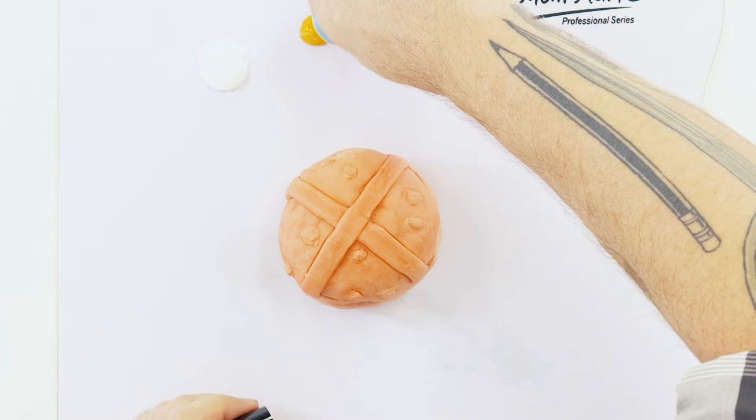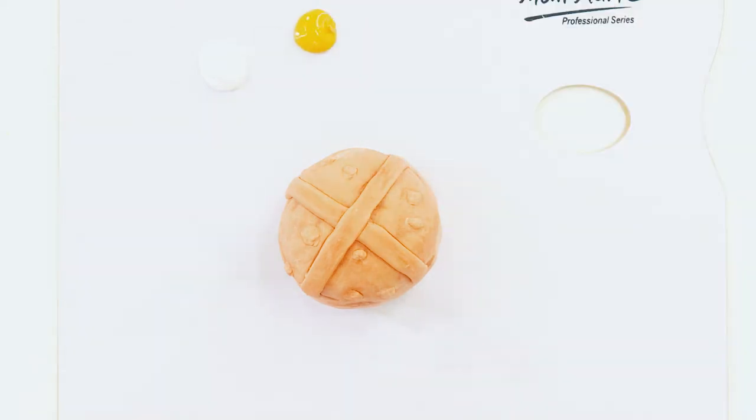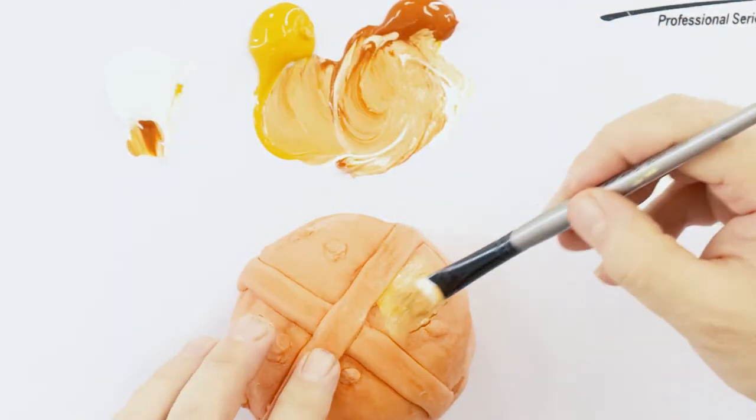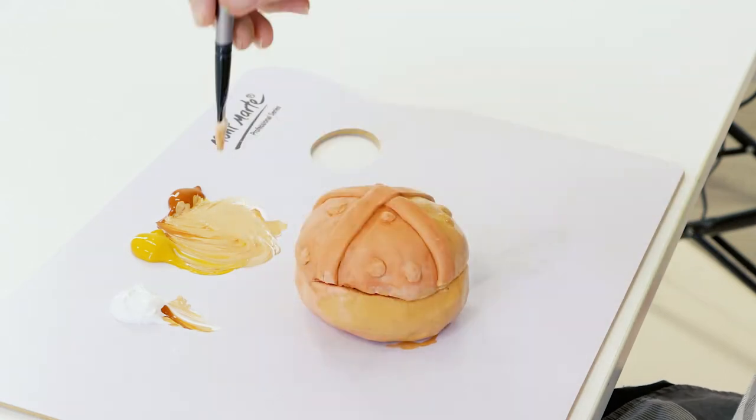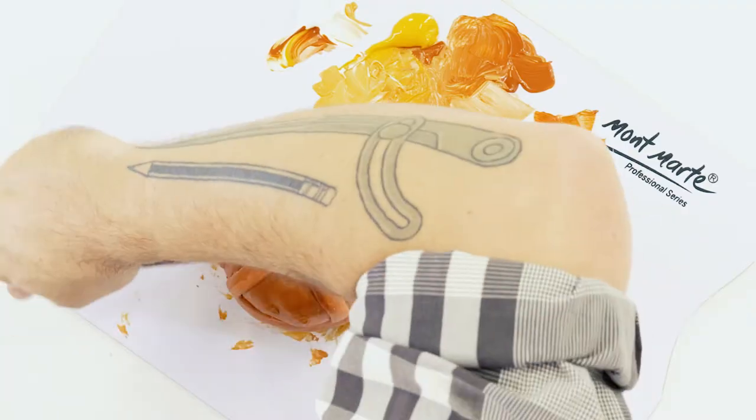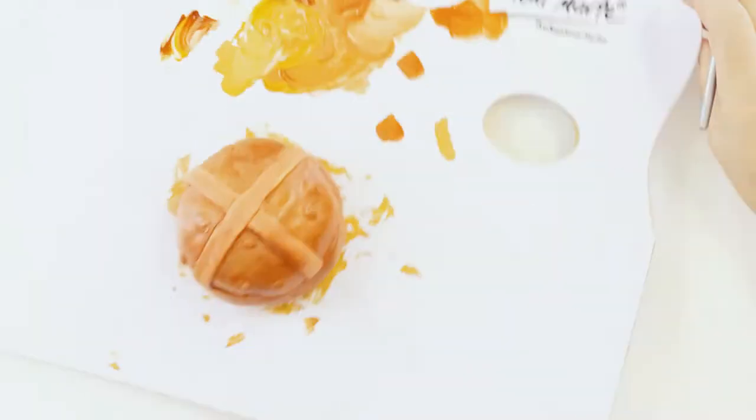Squeeze out some titanium white, yellow ochre and burnt sienna. To paint the bun we roughly mix the colour directly on the board and then paint the bun. This is good because it stops the colour from being a consistent flat tone. As well as it being more interesting it also looks more realistic.